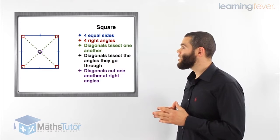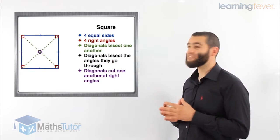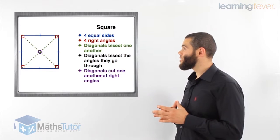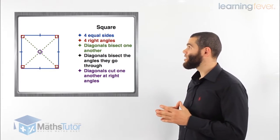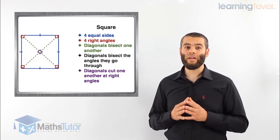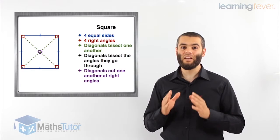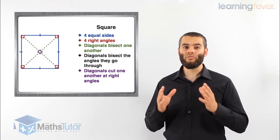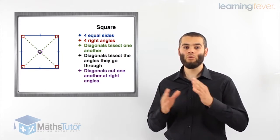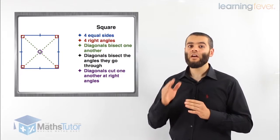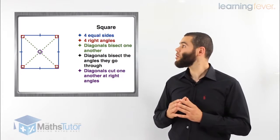First, we have the square. The square has four equal sides, marked in blue, and four right angles, meaning each angle is 90 degrees, marked in red. The diagonals of a square bisect one another — meaning they cut each other in half. So if the diagonals are four centimeters long, each portion will be two centimeters on either side.